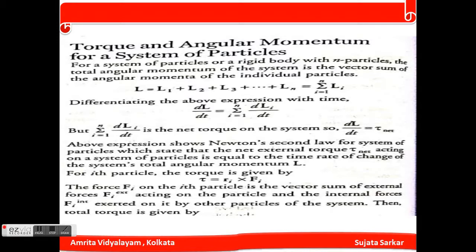Suppose there are n number of particles. The angular momentum of the system is the vector sum of the angular momentum of individual particles: L equals L1 plus L2 plus L3 and so on up to the nth particle. Differentiating this expression with respect to time, we can write dL/dt equals the summation of dLi/dt, which is the net torque on the system, equal to τ_net.